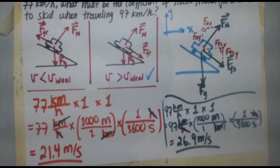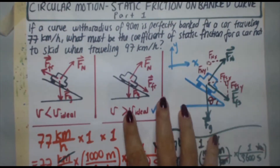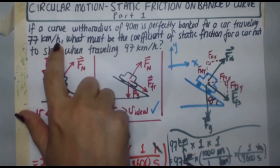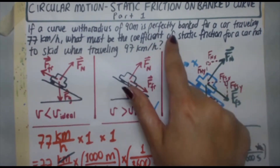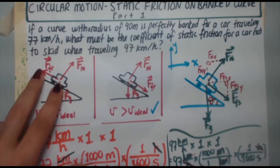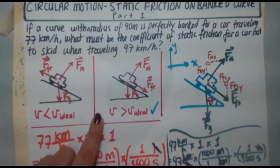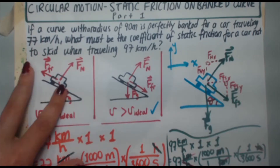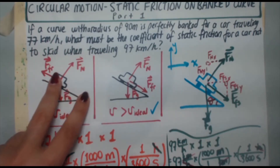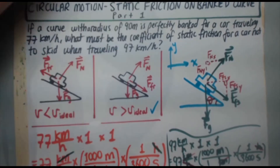I also forgot to label the angle — that should be theta. Now, I've determined friction goes down the incline. The question states 77 km/h is the perfect banking speed. If you're going slower, friction points up; if faster, friction points down. Right in the middle — at the ideal speed — friction should be zero, and that's how we'll find the banking angle.